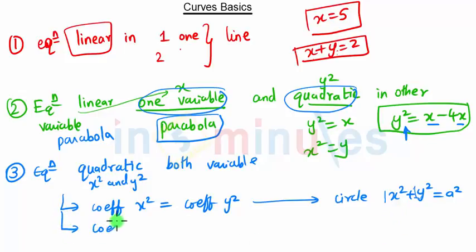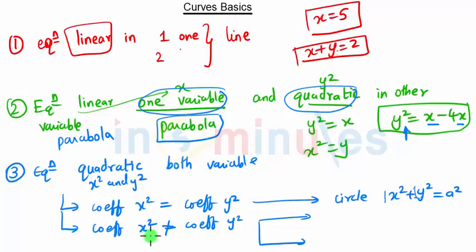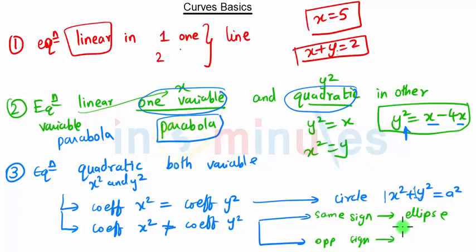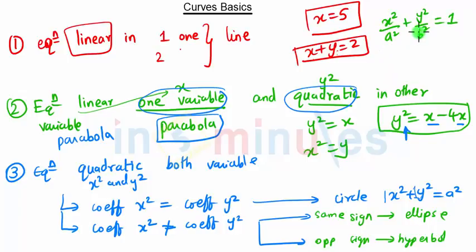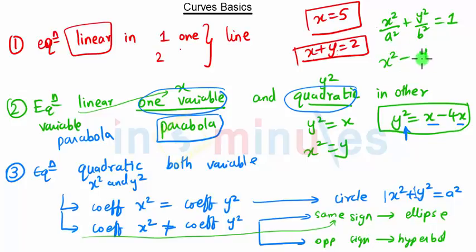If the coefficient of x² is not equal to y², we check the signs. If the signs are the same, it is an ellipse. For example, x²/a² + y²/b² = 1 — the coefficients 1/a² and 1/b² are unequal but both have the same sign, so it is an ellipse.